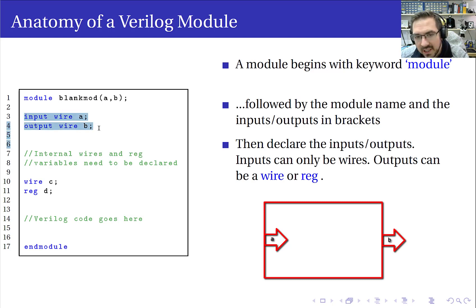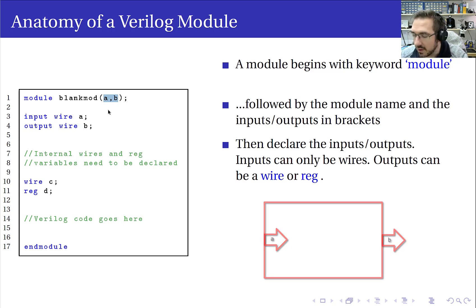What we need to do in a Verilog module is explicitly state which of these are inputs and which of them are outputs. So that information is not contained within these brackets. We have to say, in this case, input wire A.